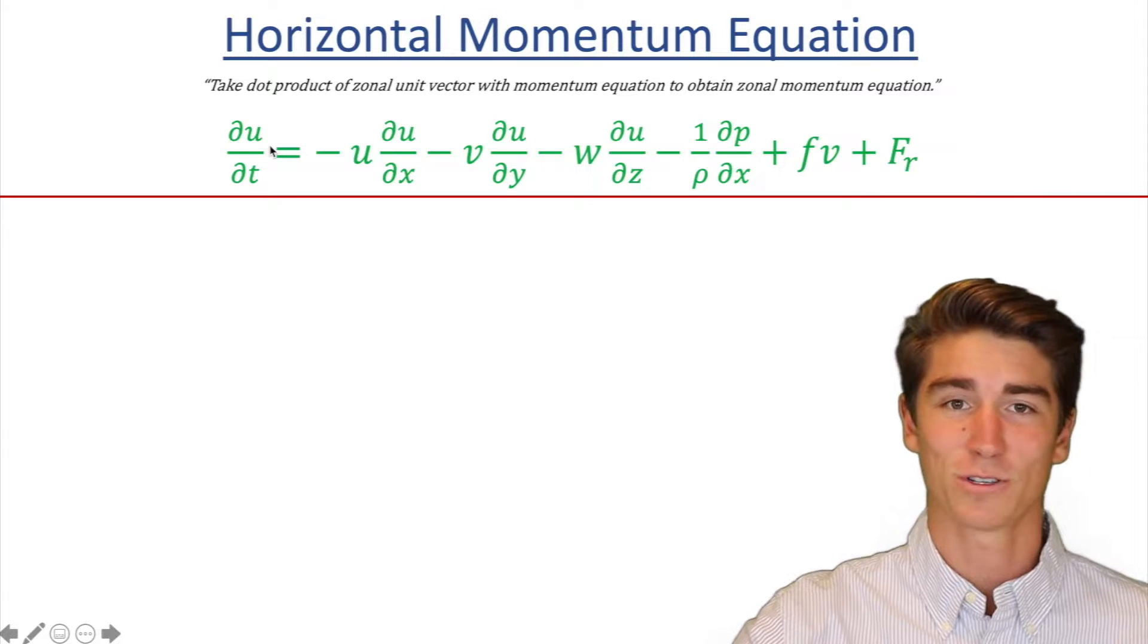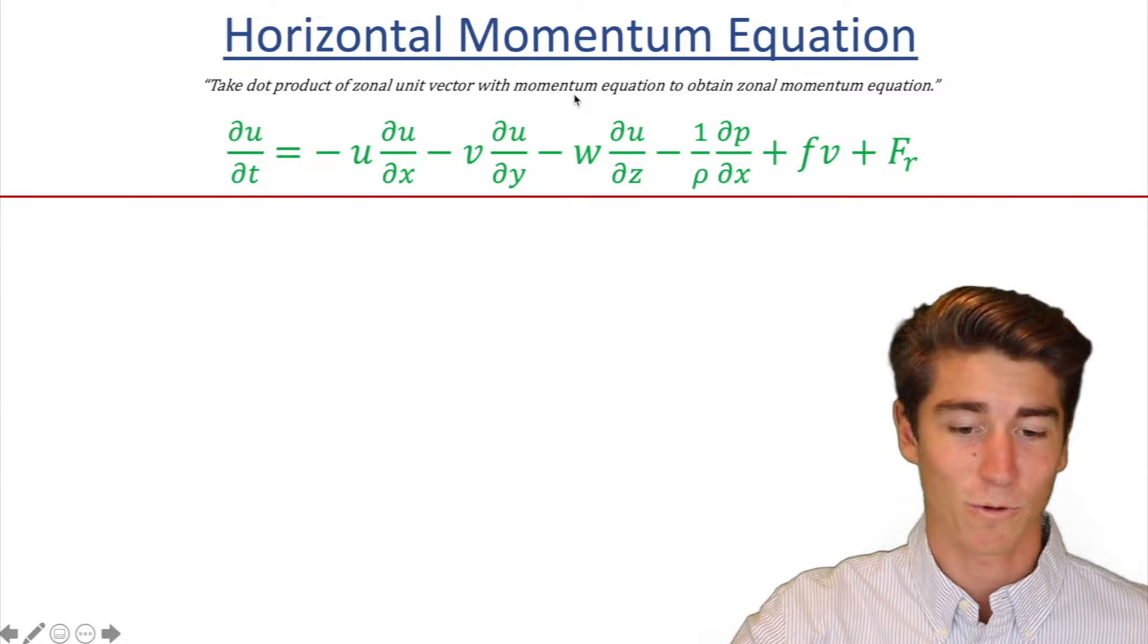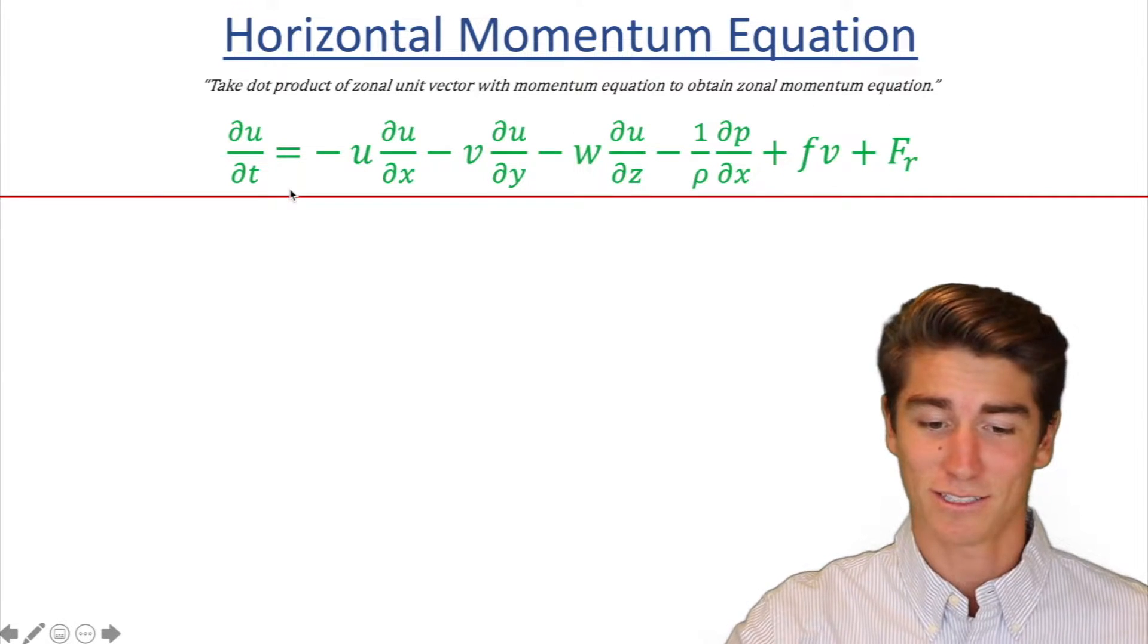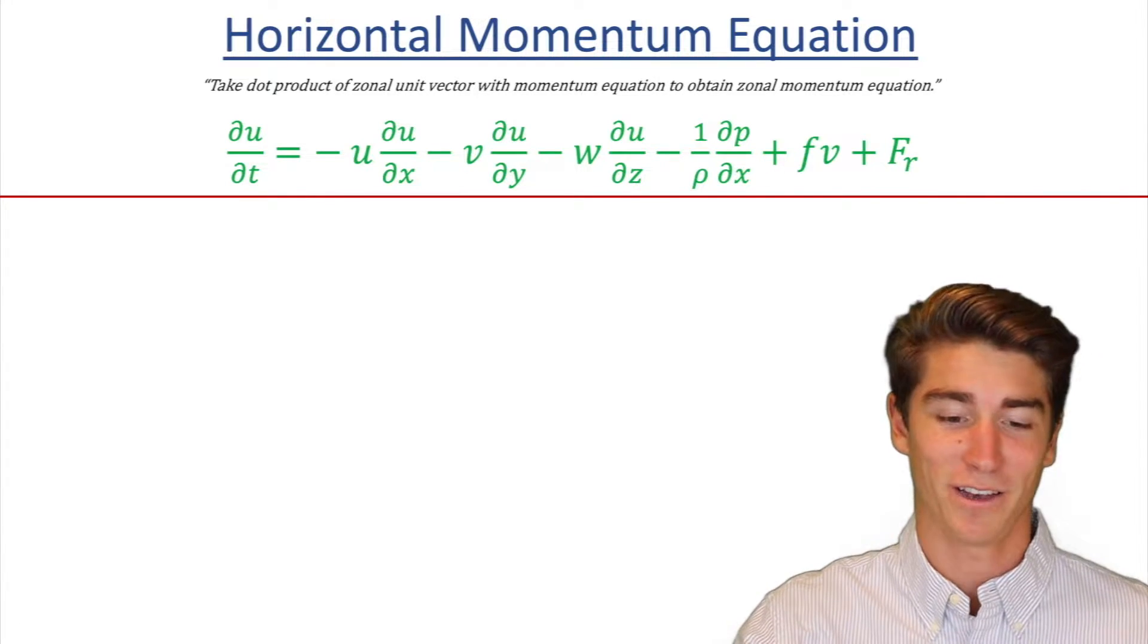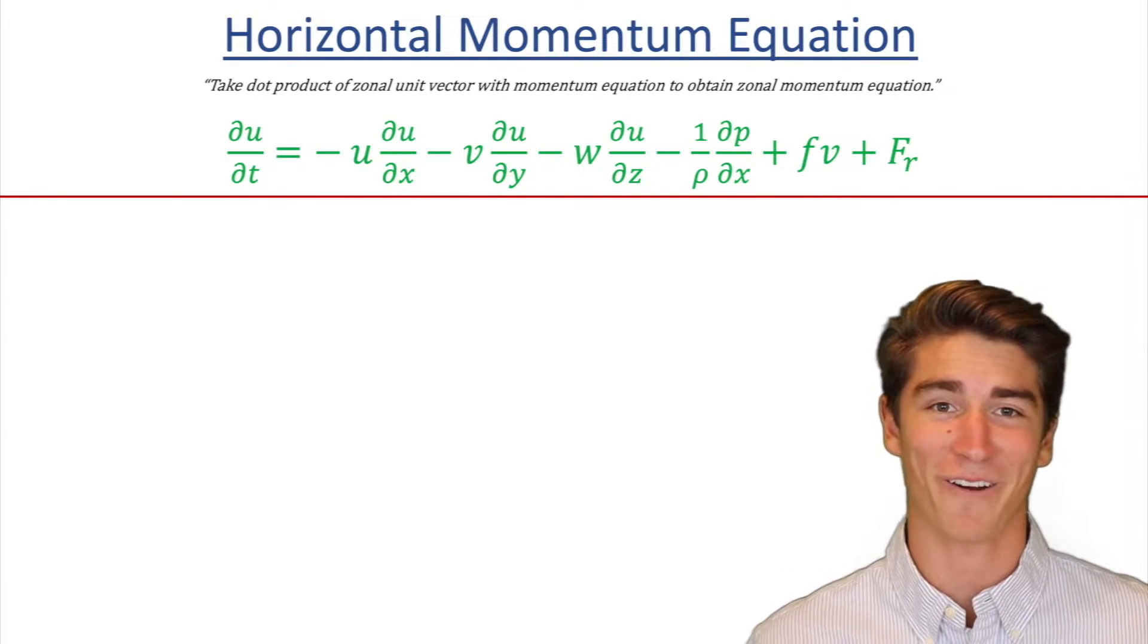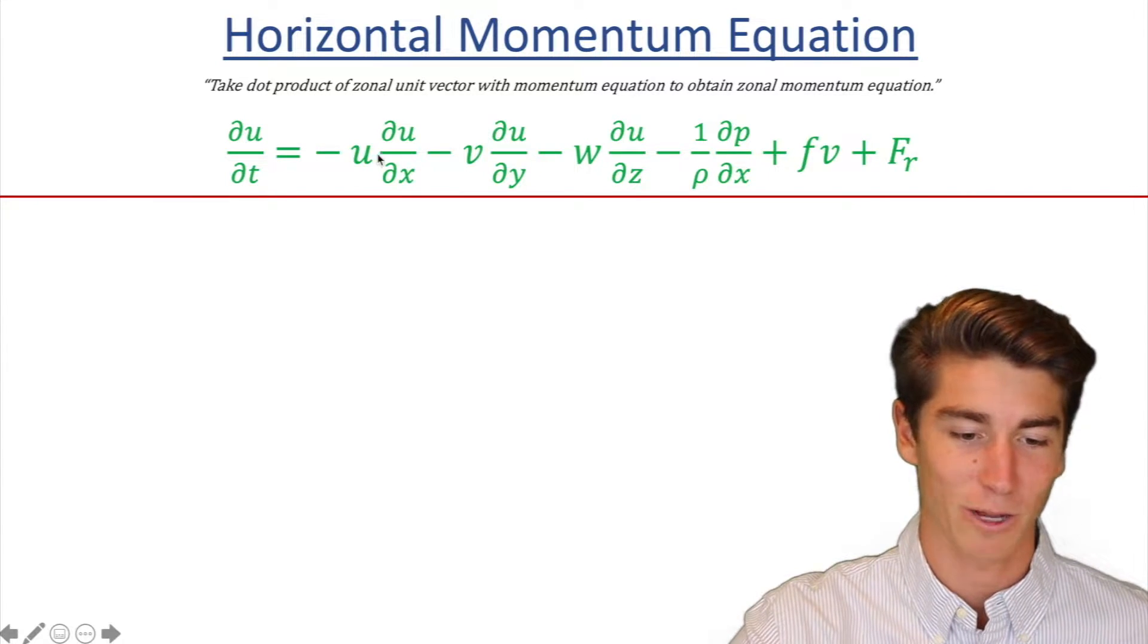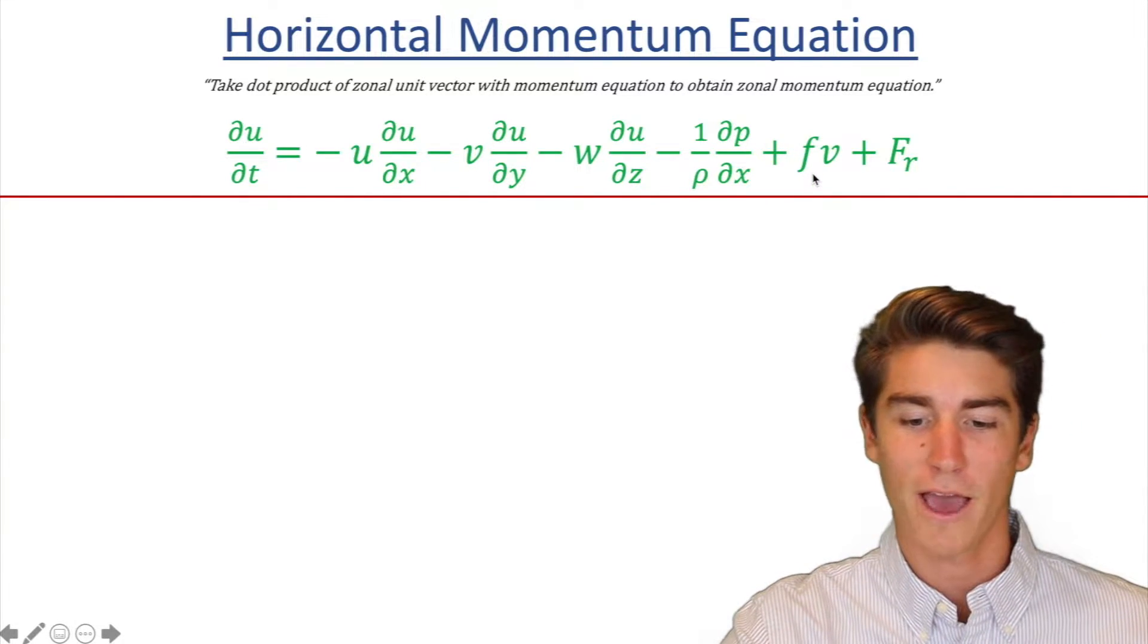So this is the horizontal momentum equation. You get it by taking the dot product of the zonal unit vector with the momentum equation to obtain the zonal momentum equation. It's kind of a mouthful, and honestly this equation looks pretty daunting. But what we're going to do is exactly what my teacher did on the first day of graduate school. She put this equation up on the board and I said, wow, I've got my work cut out for me. But what she did is she first broke it down symbol by symbol, explaining what u means, what v means, rho, p, f, all those things.